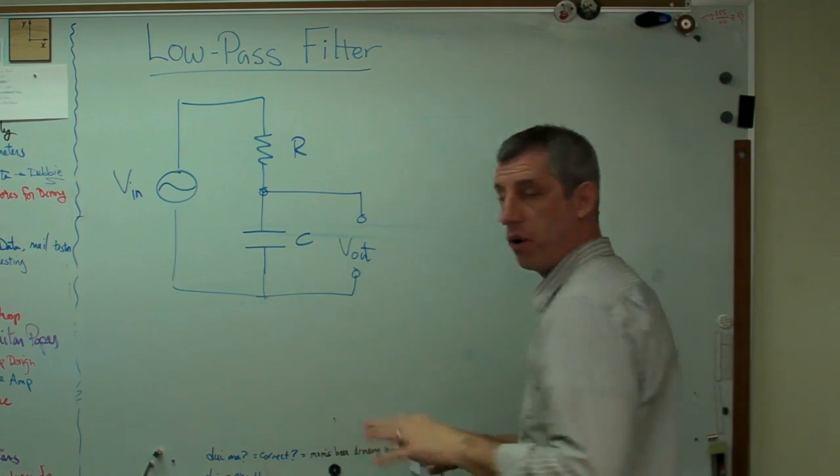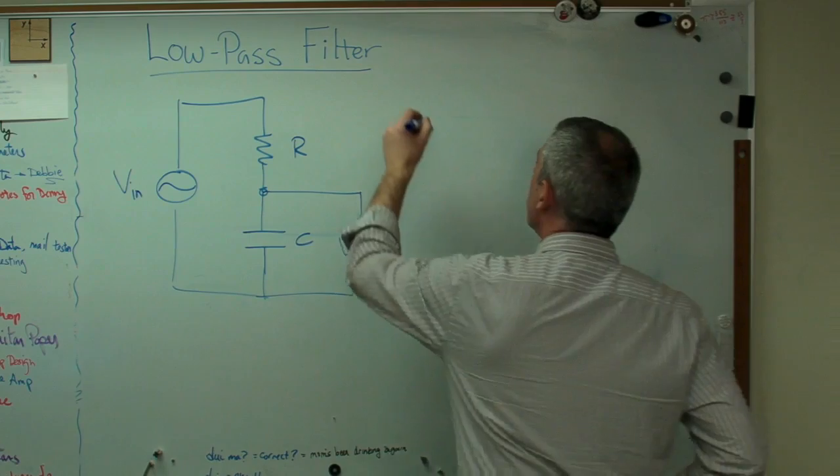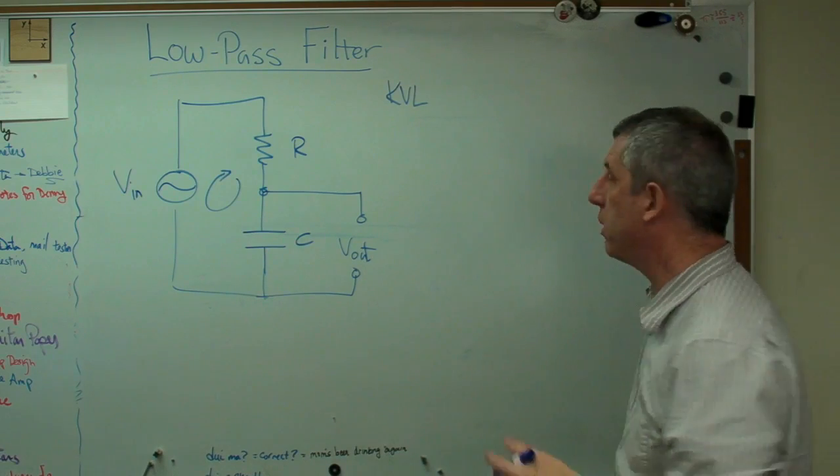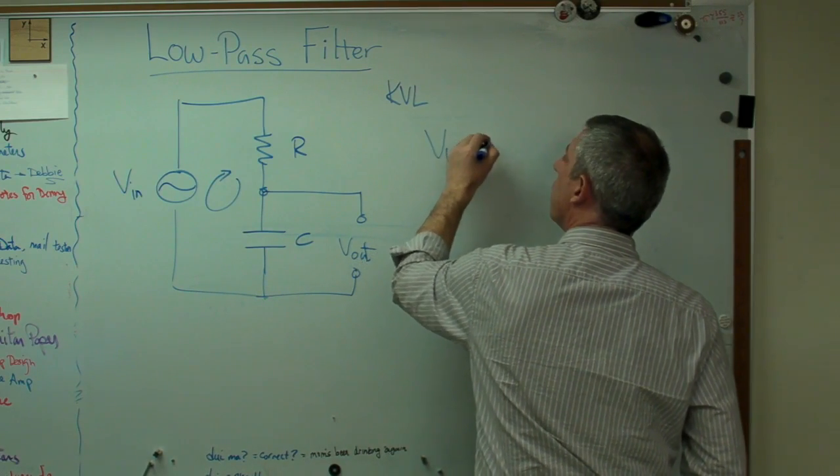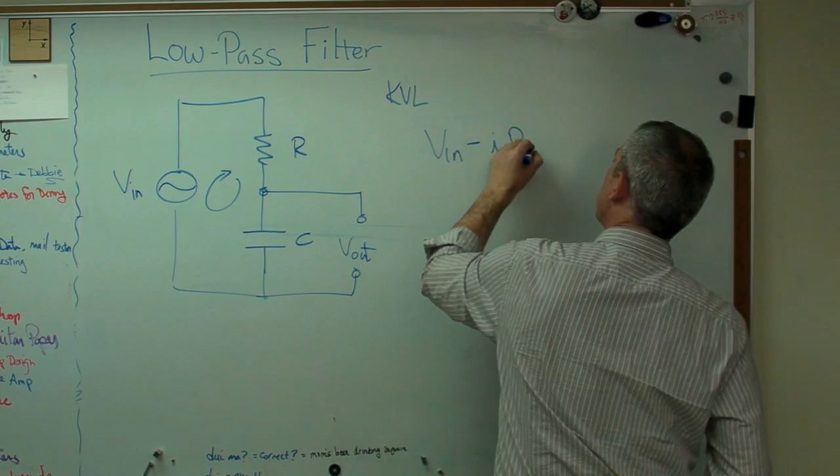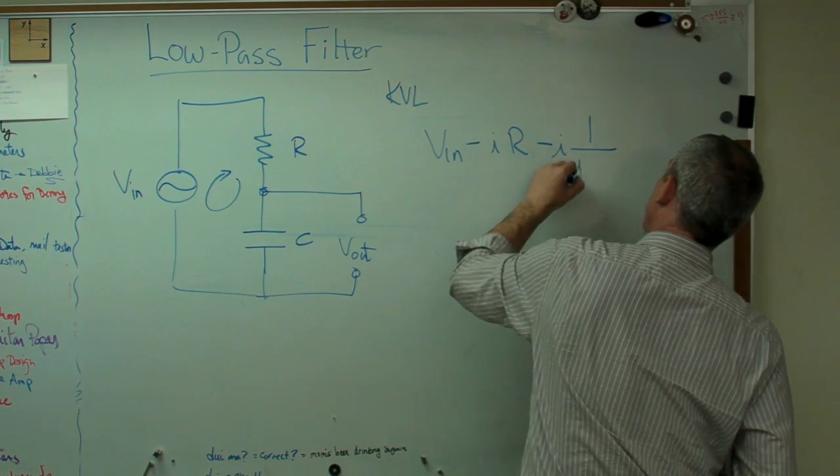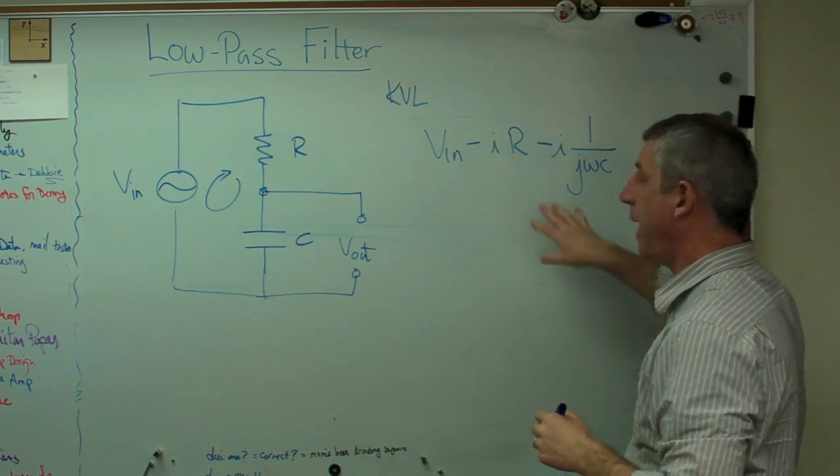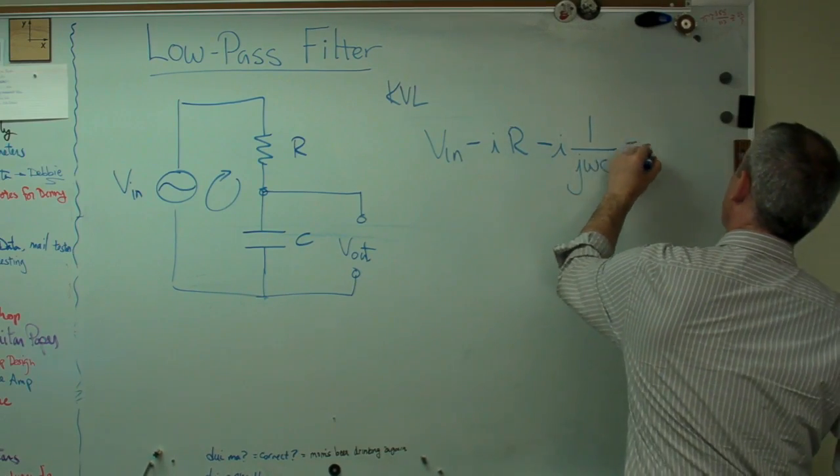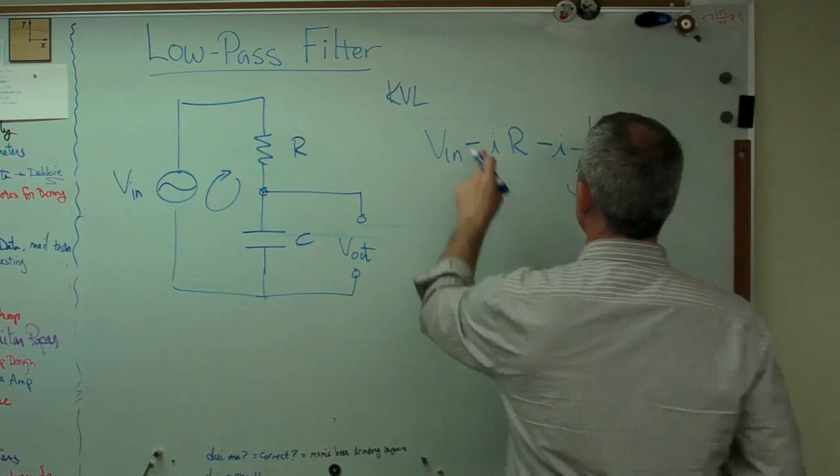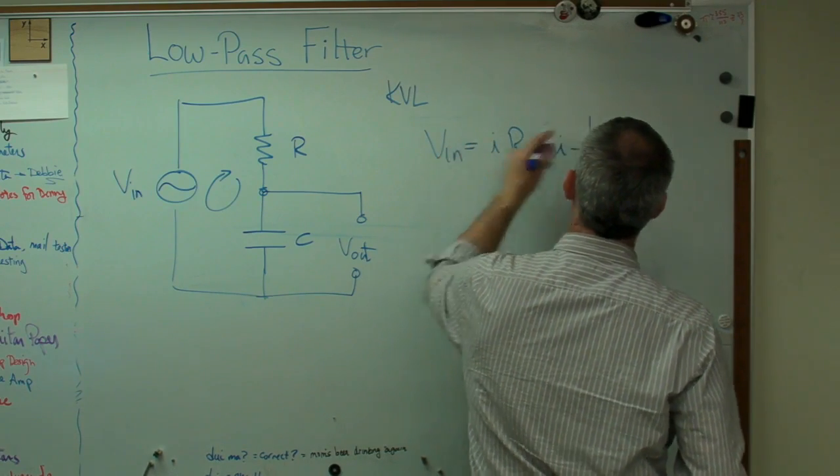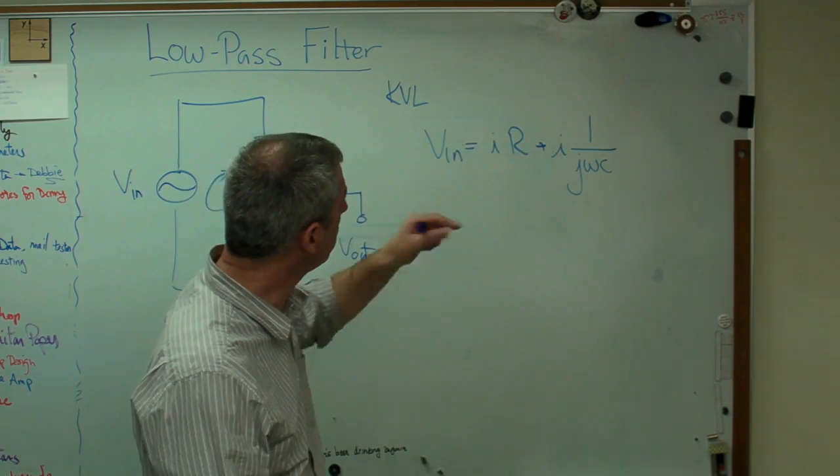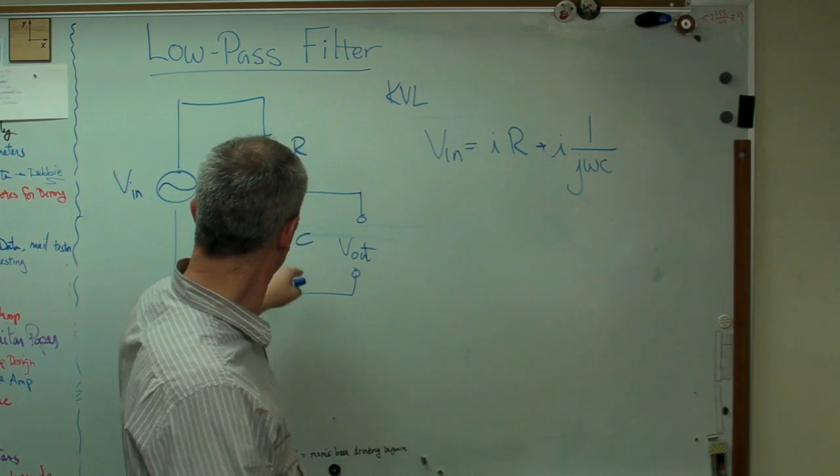So this is going to be real easy. We're going to use Kirchhoff's voltage law. KVL, sometimes you shorten it as, and that's voltage around a loop has to be zero. V in minus current times R minus current times one over J omega C, that's Ohm's law, and Ohm's law again just written in terms of AC rather than DC terms, equals zero. It would be nice if I had just plus signs here, so I'm going to do that. I just pushed the other two terms to the other side of the equation.